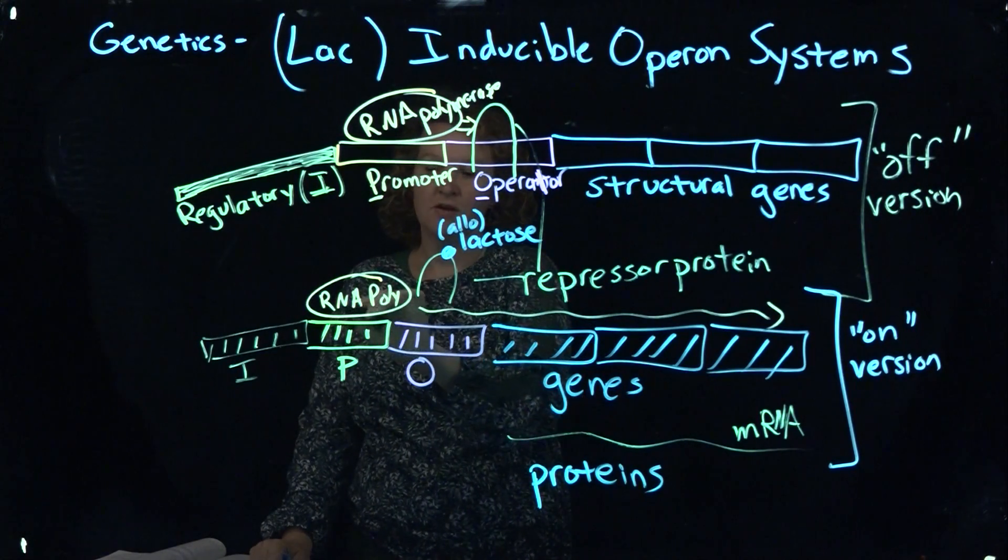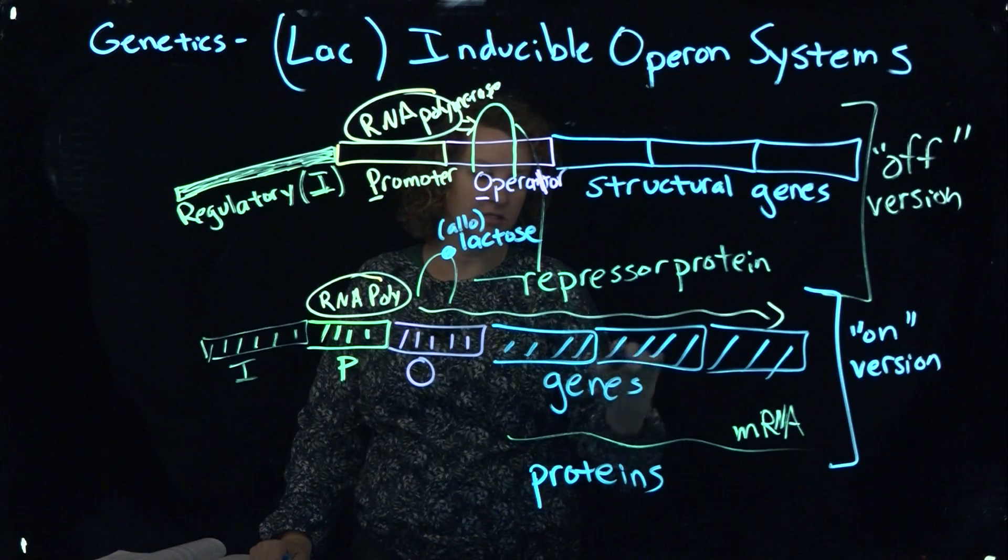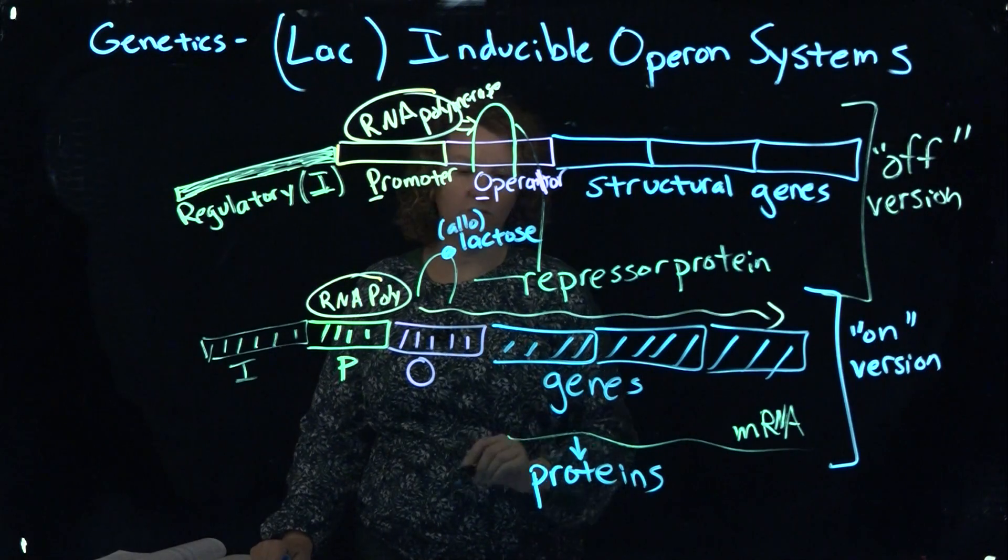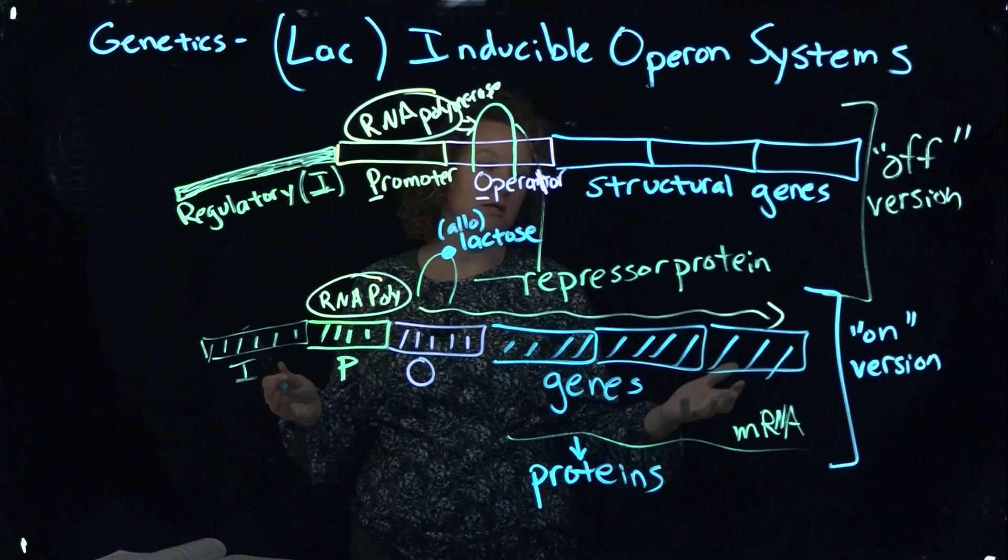And I kind of abbreviate here, your RNA polymerase will move along here, will read the A, T, Cs, and Gs, make your messenger RNA in transcription, and then go through translation into proteins. So that's basically the system here.